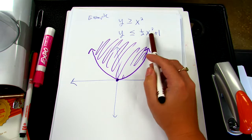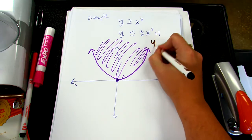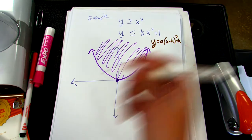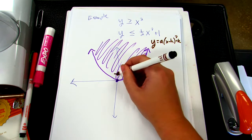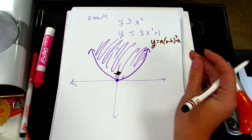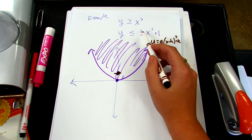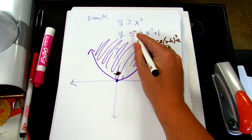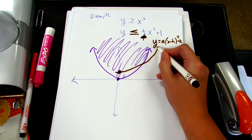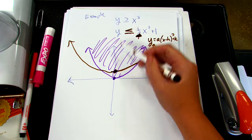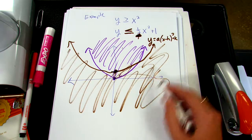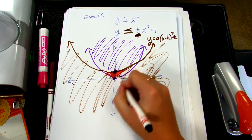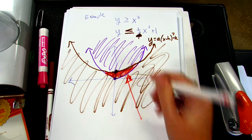For one-half x squared plus 1, remember the quadratic form a times (x minus h) squared plus k. That plus 1 moves the parabola up 1, so the vertex is at (0, 1). Since the a value is one-half, this parabola is wider than the first one. It's a solid line since it's less than or equal to, and we shade everything less than. Our answer is everything where the two shaded regions overlap — that little piece, almost like a smile, is our solution.